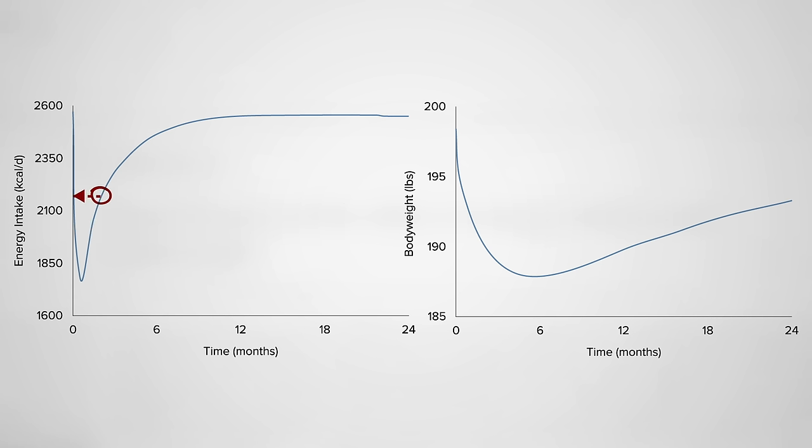By month 2, you're only down about 500, month 3, 300, and by month 6, you're only eating 200 calories less than before you went on the diet. In other words, you inadvertently suffered an exponential increase in calorie intake over those six months.